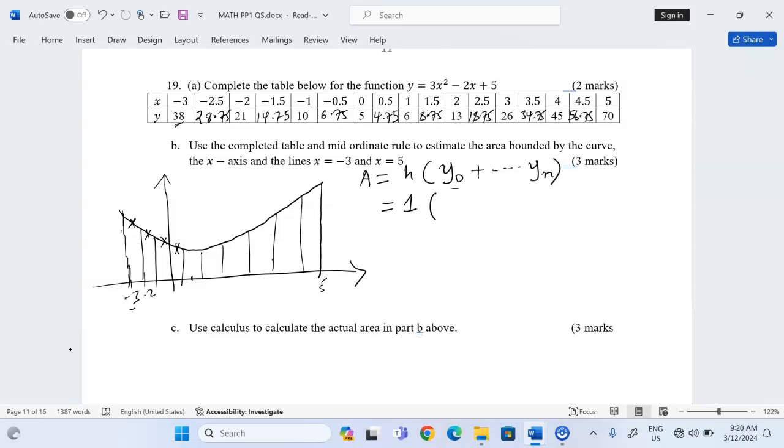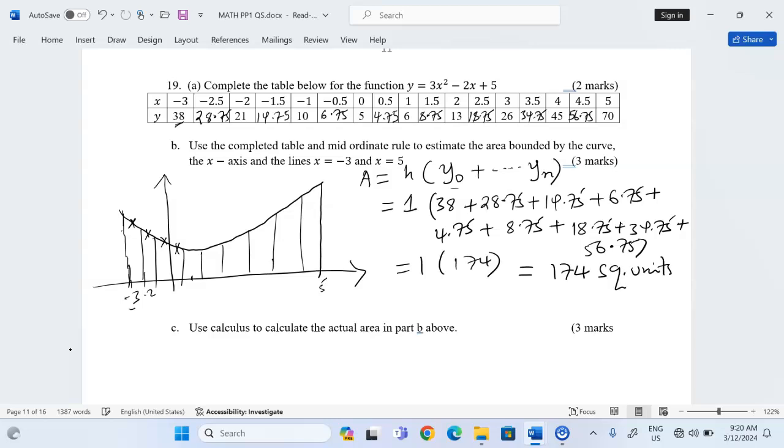We have uniform intervals of one unit. Then we add now 38 plus 28.75 plus 14.75 plus 6.75 plus 4.75 plus 8.75 plus 18.75 plus 34.75 and plus 56.75. We shall have 1 multiplied by 174, and this will give us 174 square units.